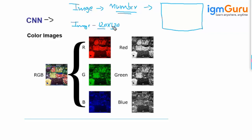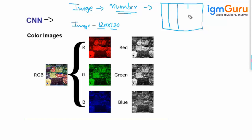Each pixel represents one number or one color intensity. If we talk about a black and white picture — we have two types of images: colorful and black and white — let's take the black and white image as an example.